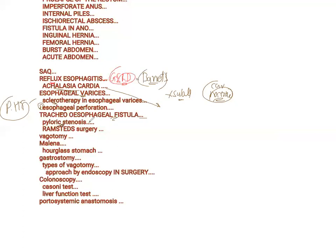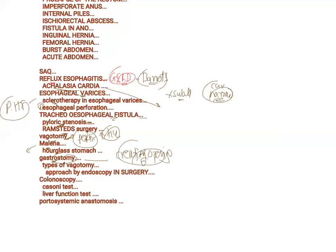For pyloric stenosis — congenital hypertrophic pyloric stenosis — Ramstedt surgery is the GI surgery performed. Vagotomy is performed for peptic ulcers; remember, the vagus nerve increases acid production, so cutting the vagus nerve reduces acid production. Melena is blood in the stool — remember the differential diagnosis. Gastrostomy is the creation of an opening into the stomach.